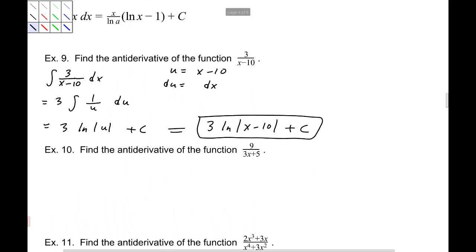Okay, now let's try number 10. We've got the antiderivative of 9 over 3x plus 5 dx. Same idea, we're going to use u equal to 3x plus 5, which makes du 3 dx. Now, I really need to replace just the dx, so I'm going to write this as 1 third du equals dx.